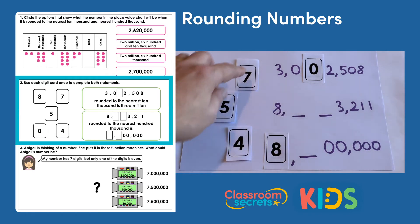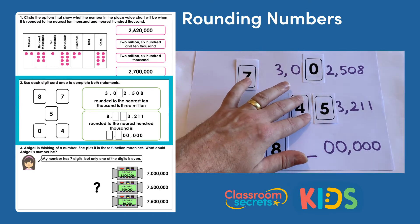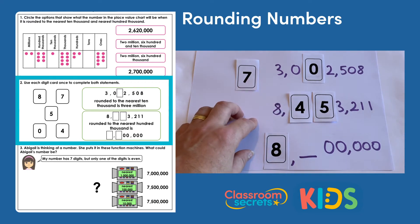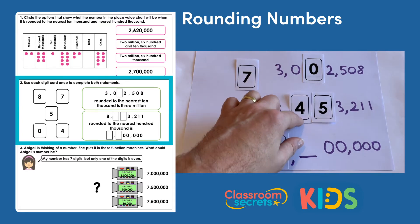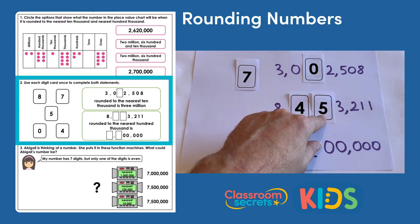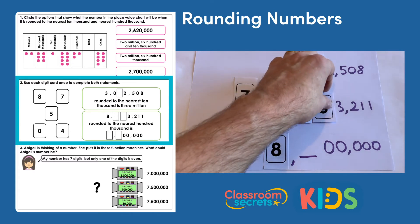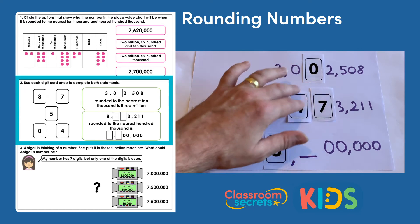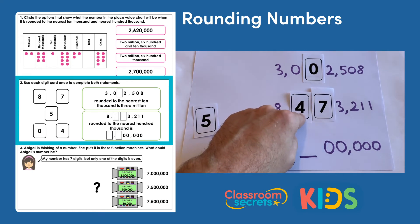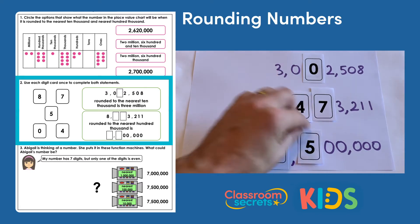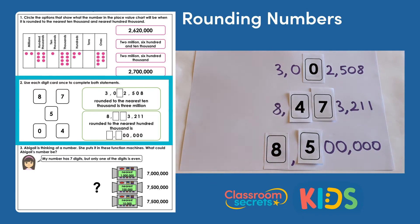Our number when rounded is going to be eight million and something. We've got seven, five, and four to work with. If we try putting four and five in, we get eight million, four hundred and fifty-three thousand — rounding to the nearest hundred thousand we look at the ten thousands digit, it's a five, so we round up to eight million, five hundred thousand, with only seven left so that doesn't work. Trying four and seven instead gives eight million, four hundred and seventy-three thousand, and the ten thousands digit is seven, so we round up to eight million, five hundred thousand — and we have a five, so that works.